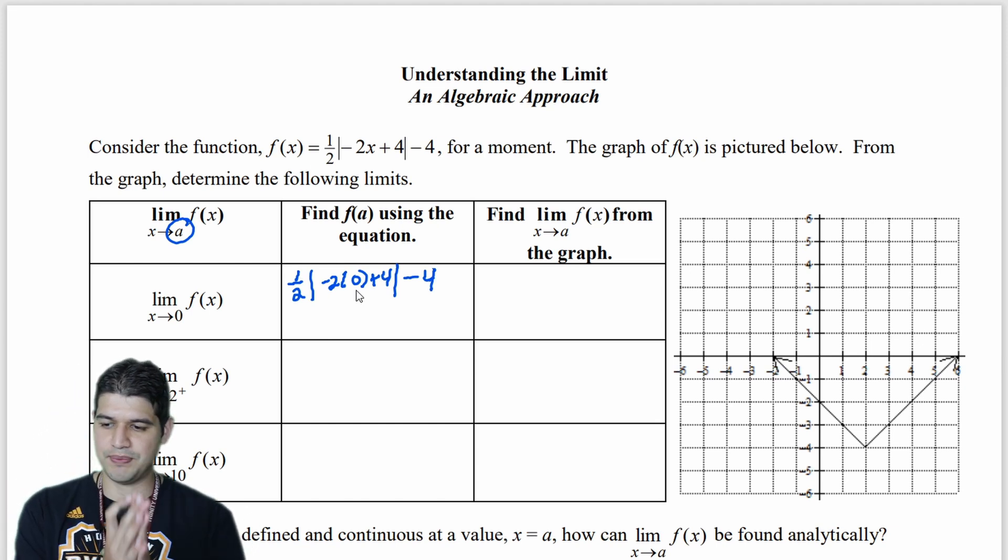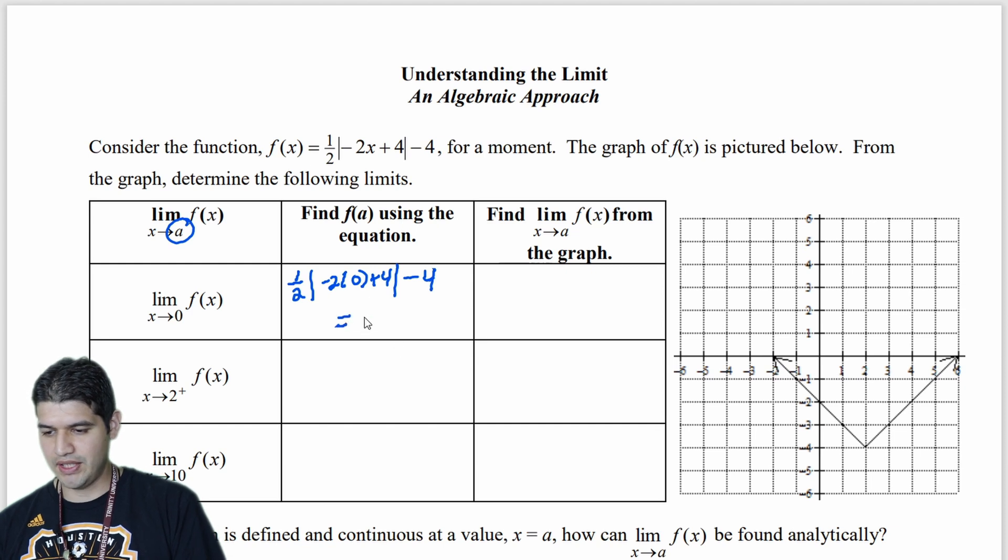4 divided by 2, it gets me 2. And 2 minus 4 is going to get me negative 2.